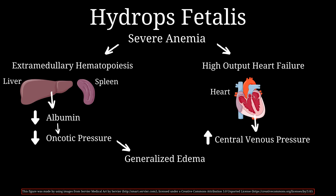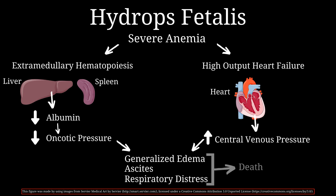Increased central venous pressure along with decreased oncotic pressure results in the leakage of massive amounts of fluid from the blood vessels. So in hydrops fetalis there is generalized edema, ascites — which is abnormal buildup of fluid in the abdominal region — and the backup of blood into the pulmonary veins due to heart failure can cause pulmonary edema, resulting in respiratory distress. All of these events can ultimately lead to the death of the fetus in utero.